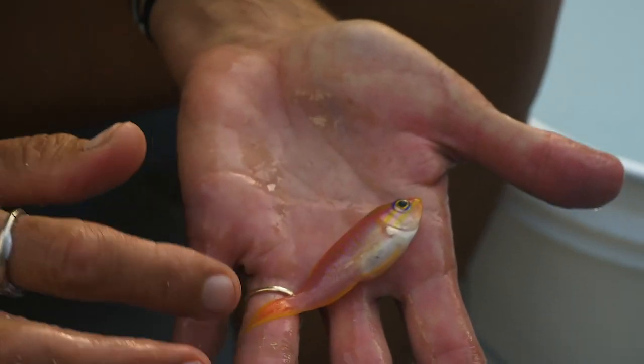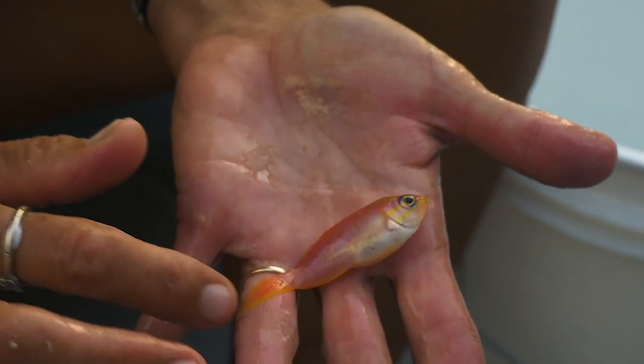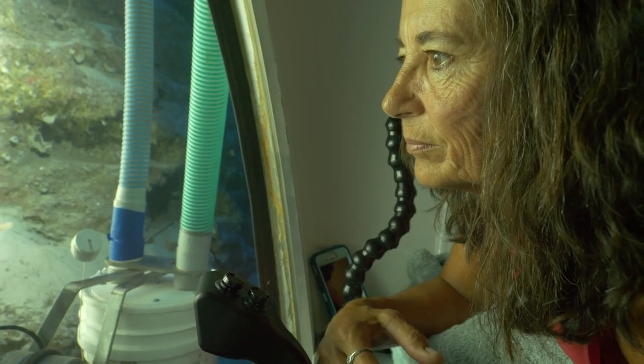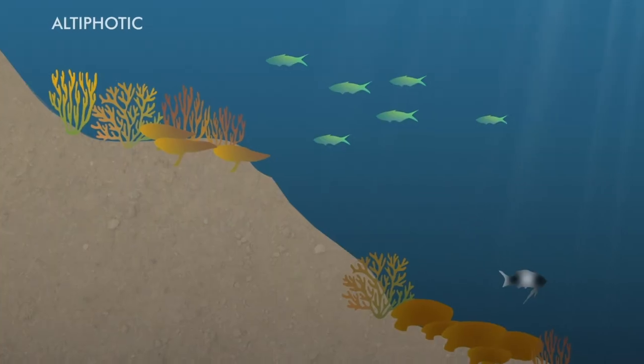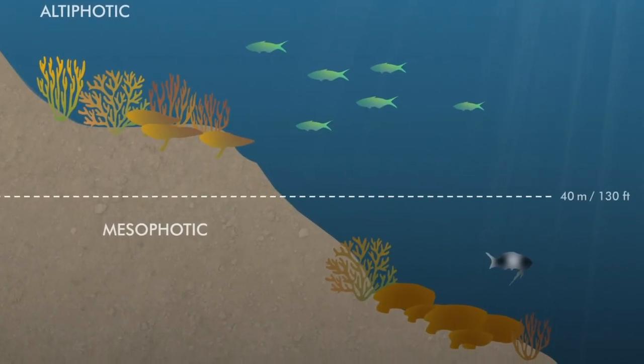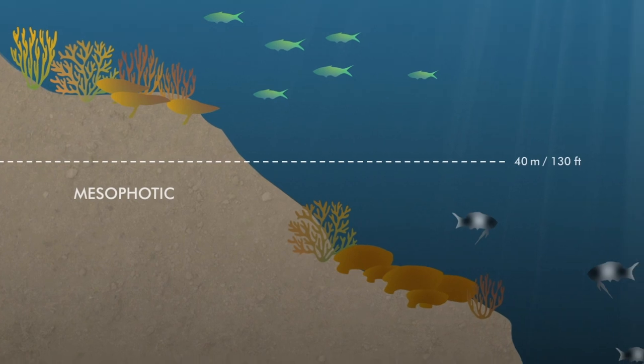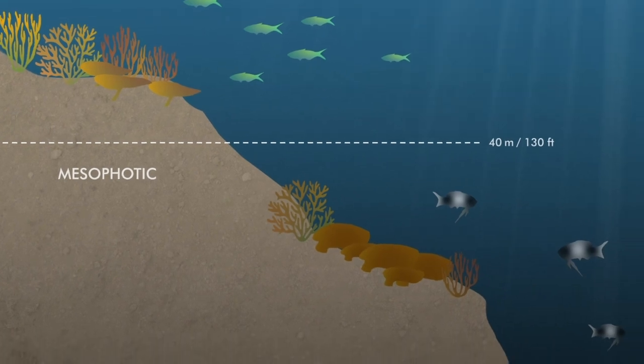Shallow coral reef ecosystems were known to be followed in depth by something called the mesophotic zone. Meso means mid, photic means light — so mid-light zone. And that was thought to go to about 150 meters, roughly 500 feet, defined as still having enough sunlight for photosynthesis so that you can have reef-building corals.